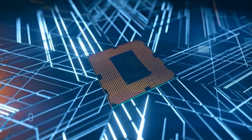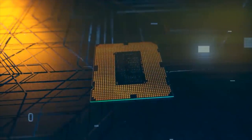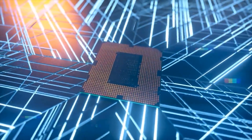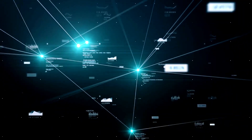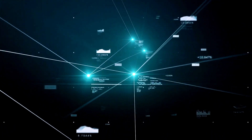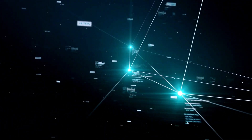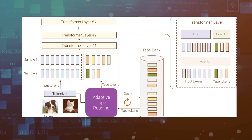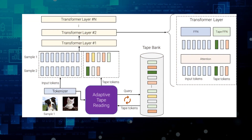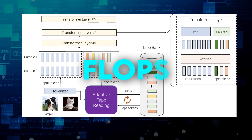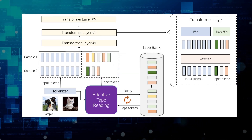With the Learnable method, this model can generate a more flexible tape bank and adjust its computation budget based on the complexity of each input example. More complex examples retrieve more tokens from the bank, which allows the model to not only use the knowledge stored in the bank, but also spend more FLOPs processing it, since the input is now larger.